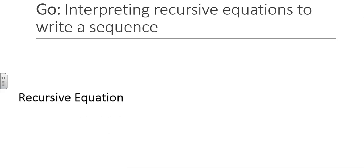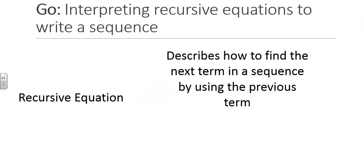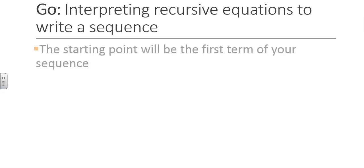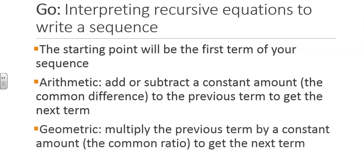You studied recursive sequences for arithmetic and geometric sequences in Math 1, Module 1. In that module, you learned how to write and use recursive equations. Remember, a recursive equation describes how to find the next term in a sequence by using the previous term. A recursive equation will also tell you where the sequence begins. In this section of your assignment, you will use the starting point as the first term of your sequence, then use the recursive rule to get the next term from the previous term. If the sequence is arithmetic, you will add or subtract a constant amount, which we call the common difference, to the previous term to get the next term. If the sequence is geometric, you will need to multiply the previous term by a constant amount, which we call the common ratio, to get the next term.